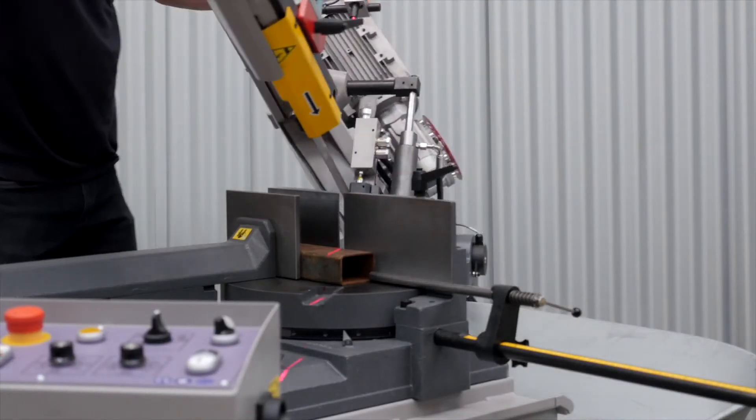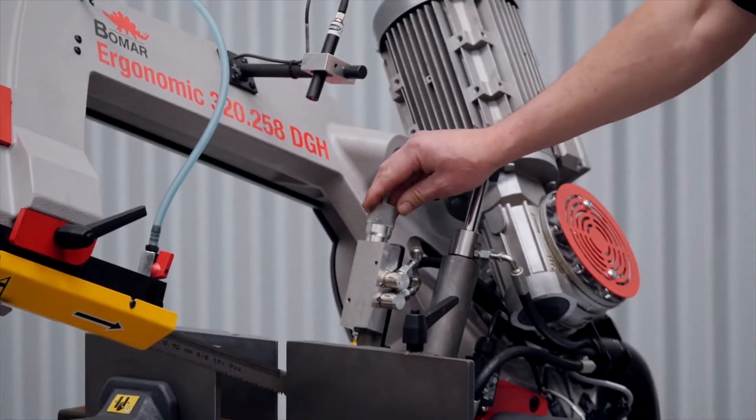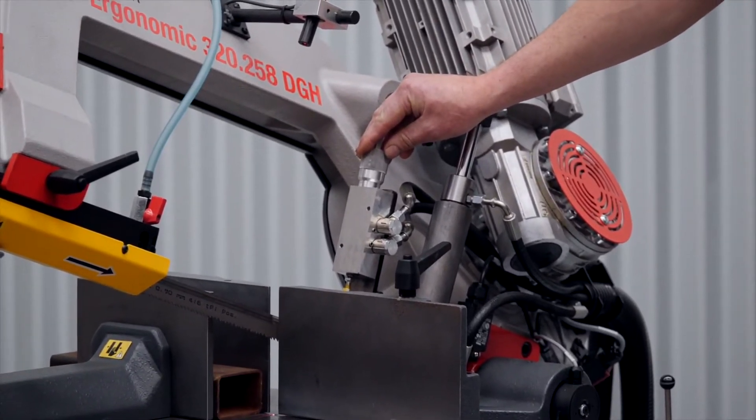The machine miter cuts in both directions 60 degrees. The guide arm is fitted with an adjustable hydraulic pressure relief valve which increases cutting accuracy and blade life.